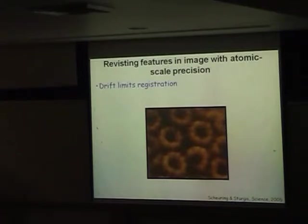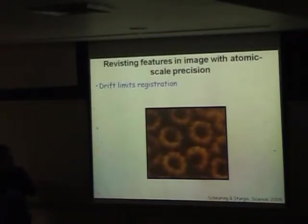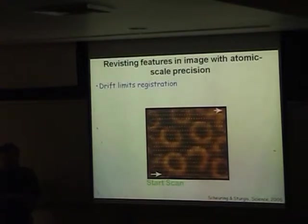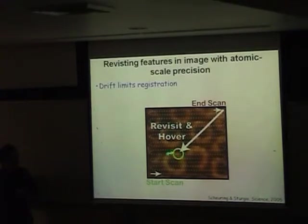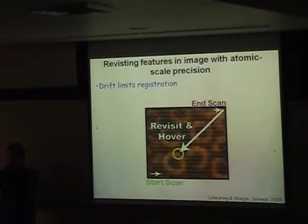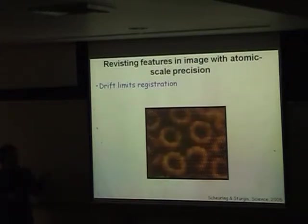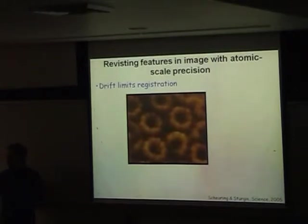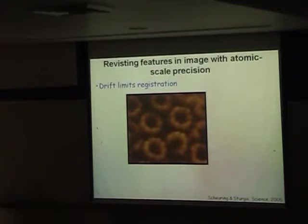There's another type of experiment a biologist would really want to do. You build up an image by scanning back and forth, and then you'd like to return to a particular feature - say a protein - and watch it open, close, open, close; watch it undergo conformational changes. Instead of image-based acquisition, you want to bring the tip back, park it on top, and measure conformational dynamics in real time at a single point. That requires registration - you've got to bring it back to the same point. In modern AFMs, you can't do that. It'll drift off and you won't be able to return to the same nanometer-scale feature.